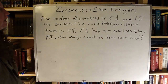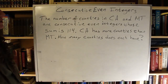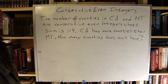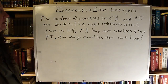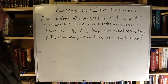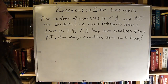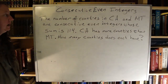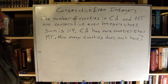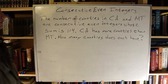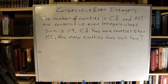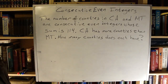The number of counties in California and Montana are consecutive even integers whose sum is 114. California has more counties than Montana. How many counties does each have?